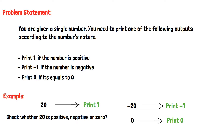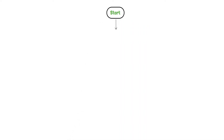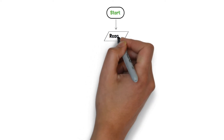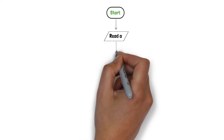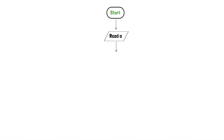Let's dive in and construct the flowchart. First, we will draw the start terminator to indicate the beginning of the program. Now we will take the input from the user and store it in variable a, so we will draw an input component with variable a. Next, we need to know whether the given number is 0 or not, so we will create a decision box and check whether a is equal to 0 or not.